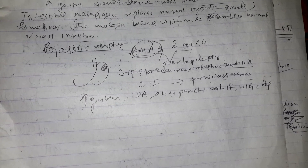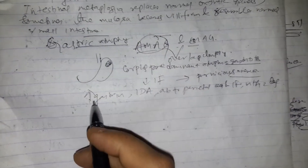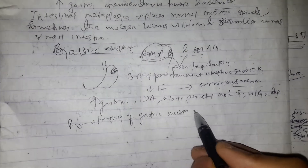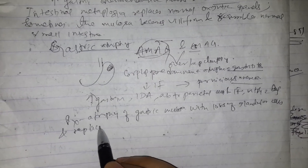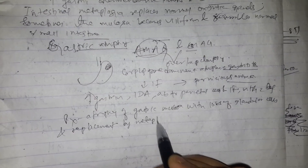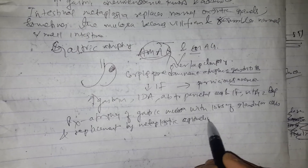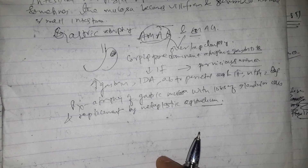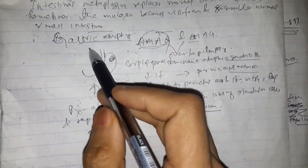Diagnosis of metaplastic atrophic gastritis is based on histological evaluation of gastric biopsy, which demonstrates atrophy of gastric mucosa with loss of glandular cells and their replacement by metaplastic epithelium. Assessment of the severity of gastric atrophy and determining the subtype of chronic atrophic gastritis requires gastric biopsy mapping with an adequate number of biopsies from specific sites. AMAG is confined to the gastric body and fundus.